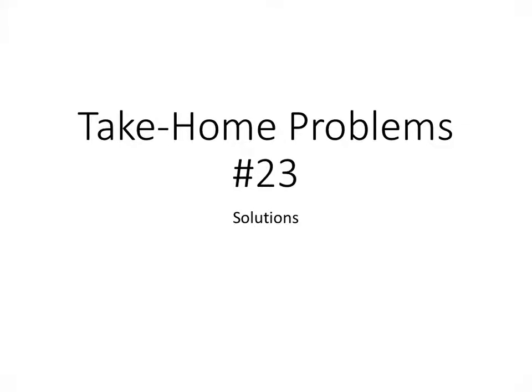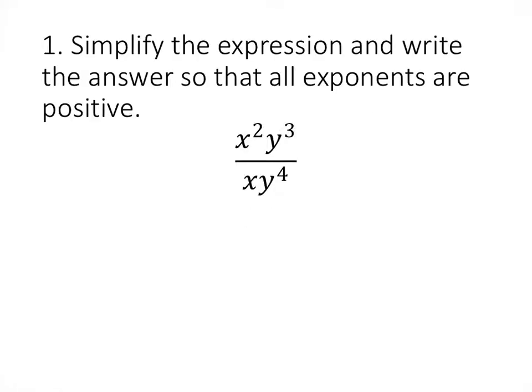This video contains the solutions to take home problems number 23. These first couple of problems are all about rules of exponents. So the rule that we're talking about here is that whenever we have x to the a divided by x to the b, the result is x to the a minus b.